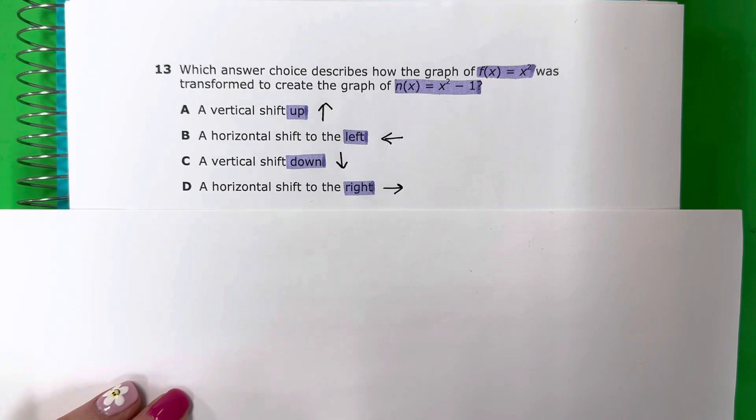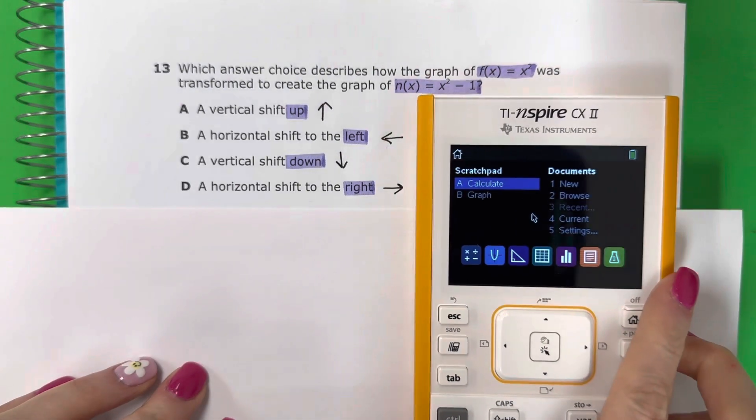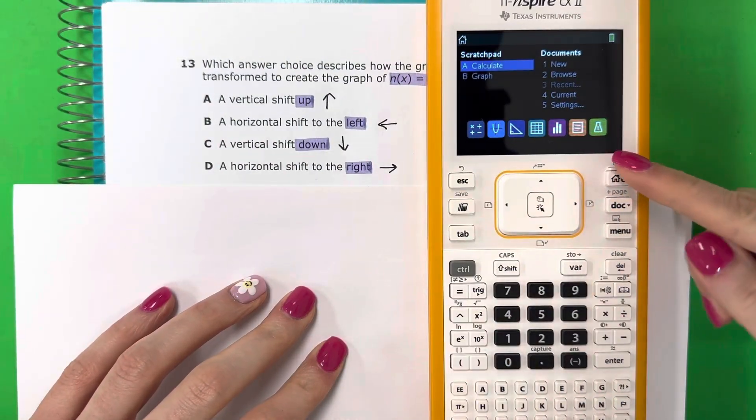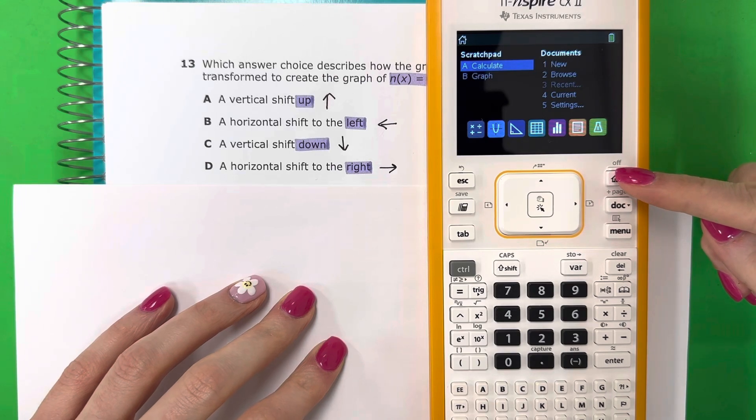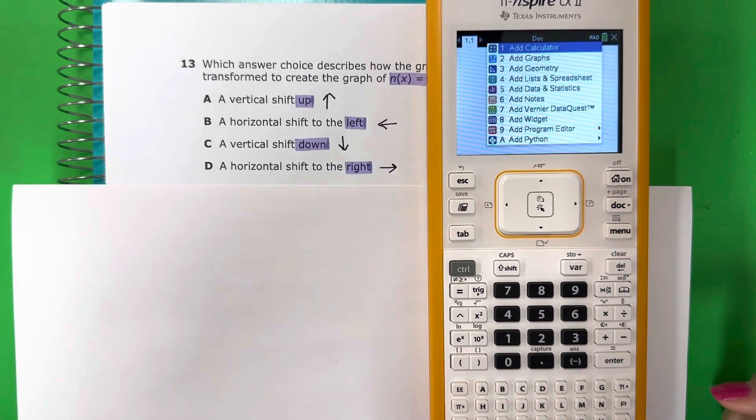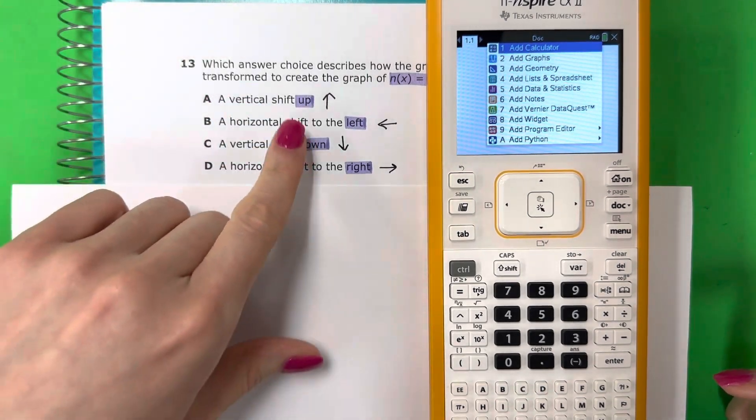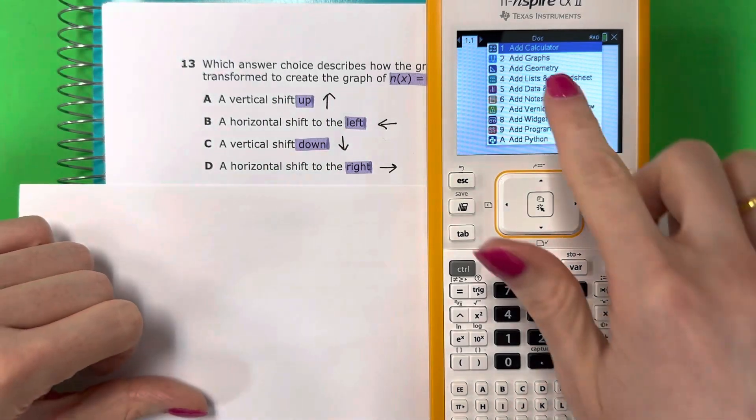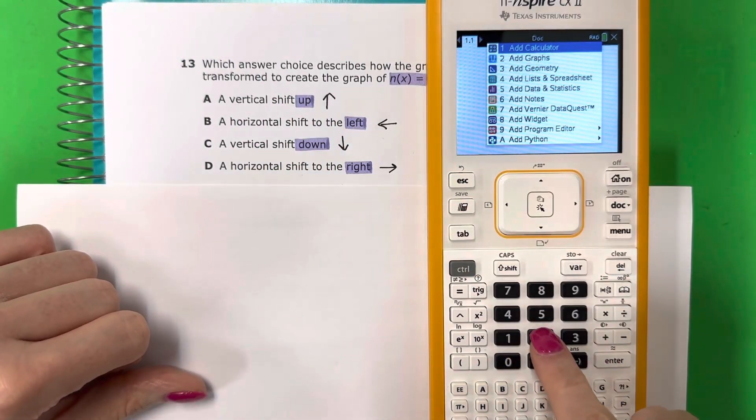Let's go ahead and do this with the calculator first. Vamos a hacer por calculadora primero. Okay, so get your calculator. Go ahead and push the on button. You should be here on the screen. Go ahead and push 1. No. Okay, so I want the graph. Quiero la gráfica because I want to see how did it move. Porque quiero ver cómo se mueve. So graph is 2. Es 2. Go ahead and push 2.